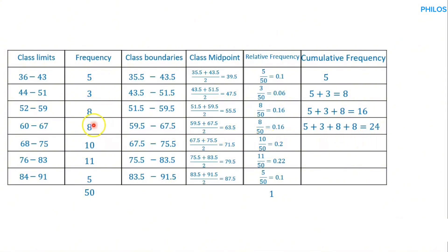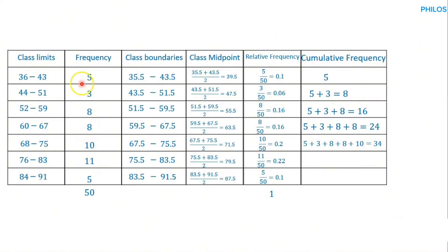For the fifth class: 5 plus 3 plus 8 plus 8 plus 10 gives 34. For the sixth class: 11 plus 10 plus 8 plus 8 plus 3 plus 5 gives 45. For the last class: 5 plus 11 plus 10 plus 8 plus 8 plus 3 plus 5 gives 50.